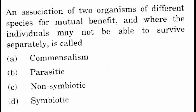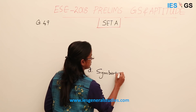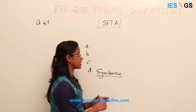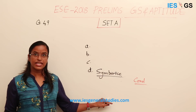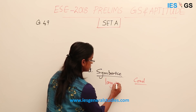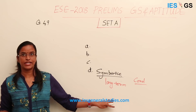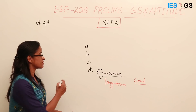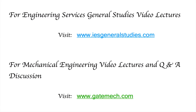Question 49: An association of two organisms of different species for mutual benefit, where the individuals may not be able to survive separately, is called: A. Commensalism, B. Parasitism, C. Non-symbiotic, D. Symbiotic. As discussed in our environment concepts article, the association between coral polyps and zooxanthellae algae is an example of a symbiotic relation. It is a long-term relation where participating organisms cannot live separately. When coral bleaching occurs, the algae dies and the coral dies with it. The answer is D, symbiotic.